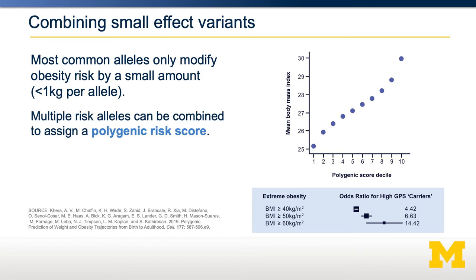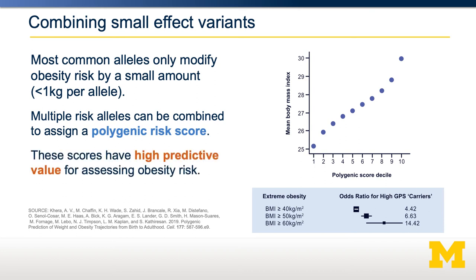Individuals with a higher polygenic risk score generally have a BMI about five points higher than individuals with the lowest score. Therefore, even knowing nothing about an individual's family history, the polygenic risk score can have highly predictive value for assessing obesity risk at any point in their life, even from birth.